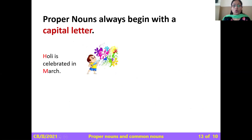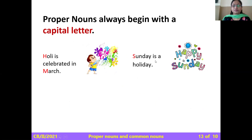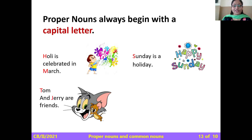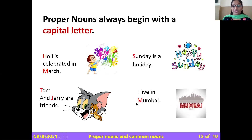Let's see examples. 'Holi is celebrated in March' — 'Holi' is a particular festival name starting with capital H, and 'March' is a particular month starting with capital M. 'Happy Sunday' — Sunday is a particular day of the week, so S is capital. 'Tom and Jerry are friends' — Tom and Jerry are names of a particular cat and mouse, so T and J are capital. 'I live in Mumbai' — Mumbai is a particular place, so M is capital.